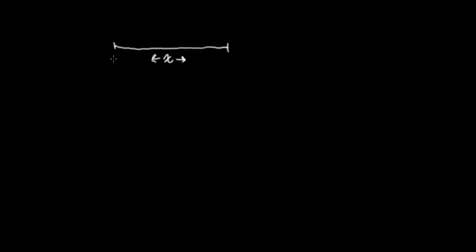I've drawn a length of string here. I'm going to let x represent the coordinate looking down the guitar neck, and we'll say that this has length L. On the left could be the nut, and on the right that could be the bridge, or vice versa. We'll define a function y(x, t) that indicates the displacement at position x at a given time t. So our string might look something like this if we're plucking it in the middle.